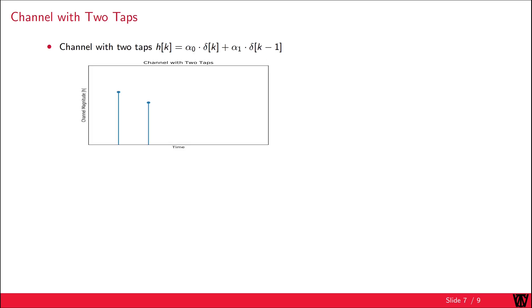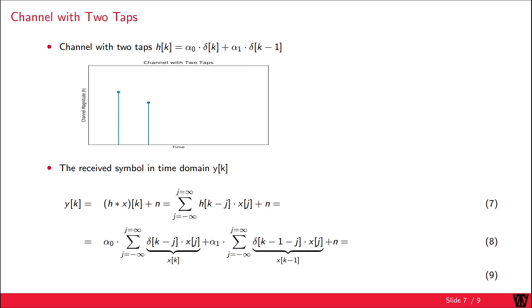Now we discuss the case of a channel with two taps. The received symbol is once again given by the convolution of H times X plus the noise. Similar to the previous case, we start by inserting the channel coefficients into this equation. These summations can again be simplified due to the delta impulse. We end up with alpha 0 times X from K plus alpha 1 times X from K minus 1 plus noise.